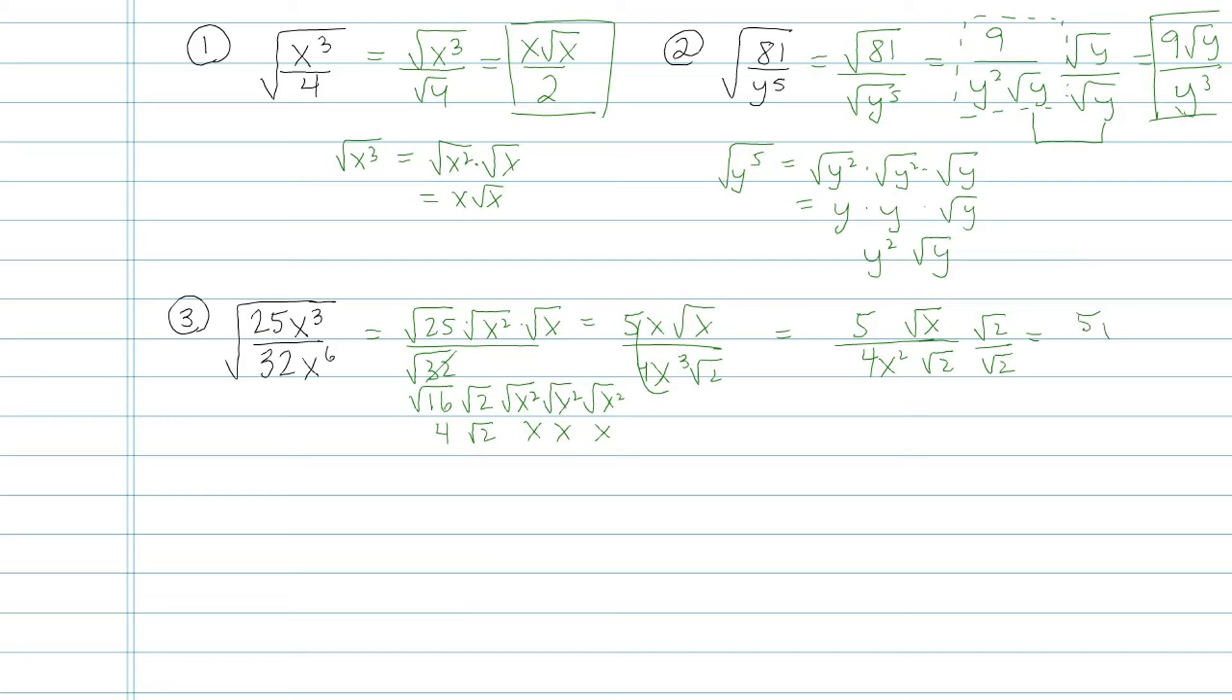Now on top, I have 5 root 2x. On the bottom, I have 4x squared, and then root 2 times root 2 is regular old 2. So my bottom is going to be 8x squared. Now that cannot be simplified any further. So that's my final answer there.